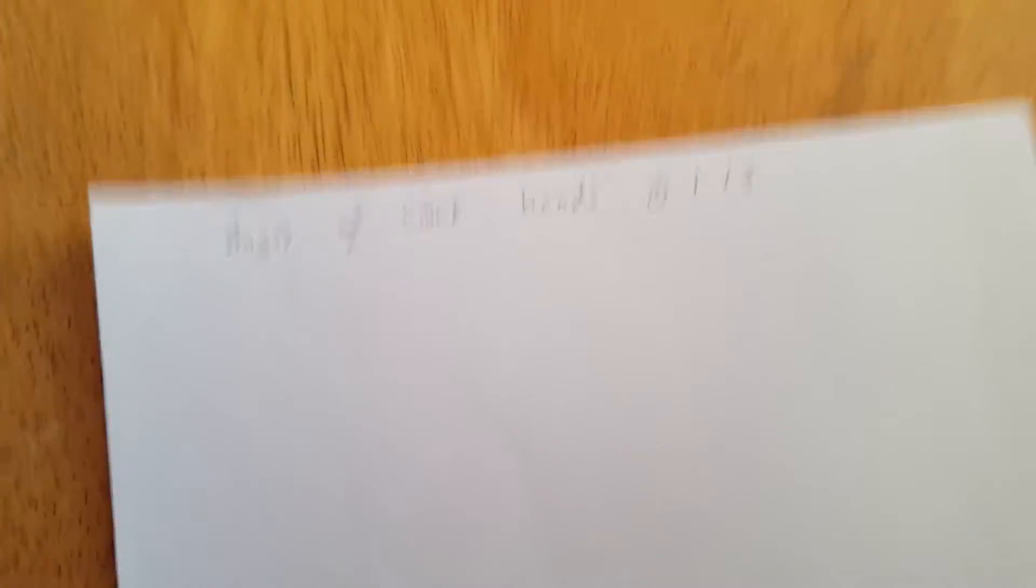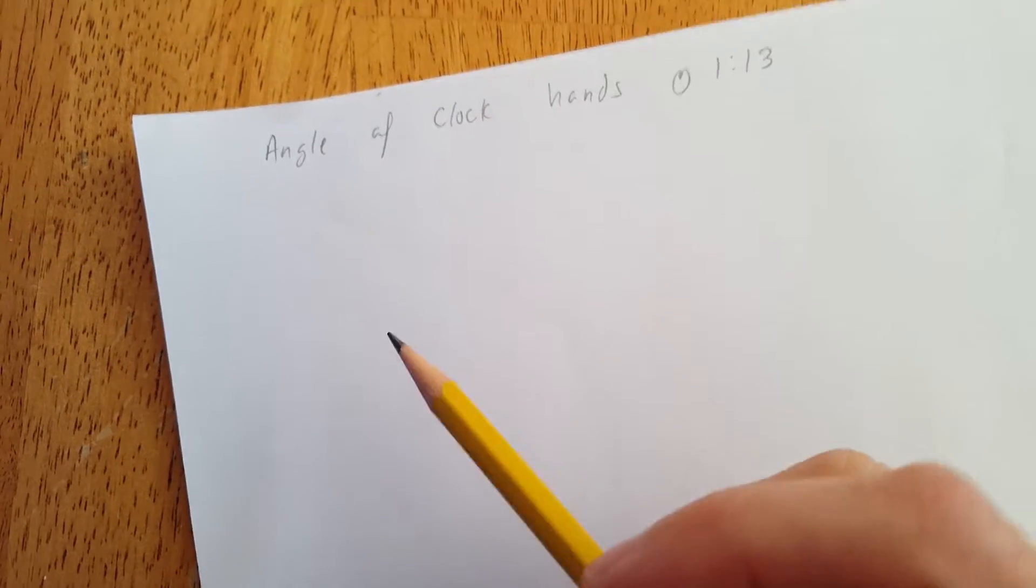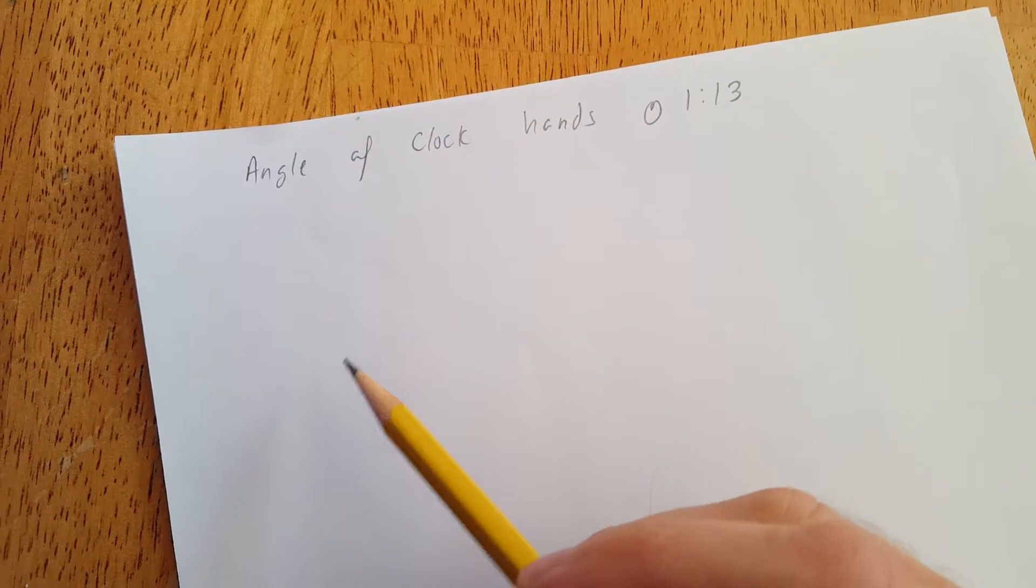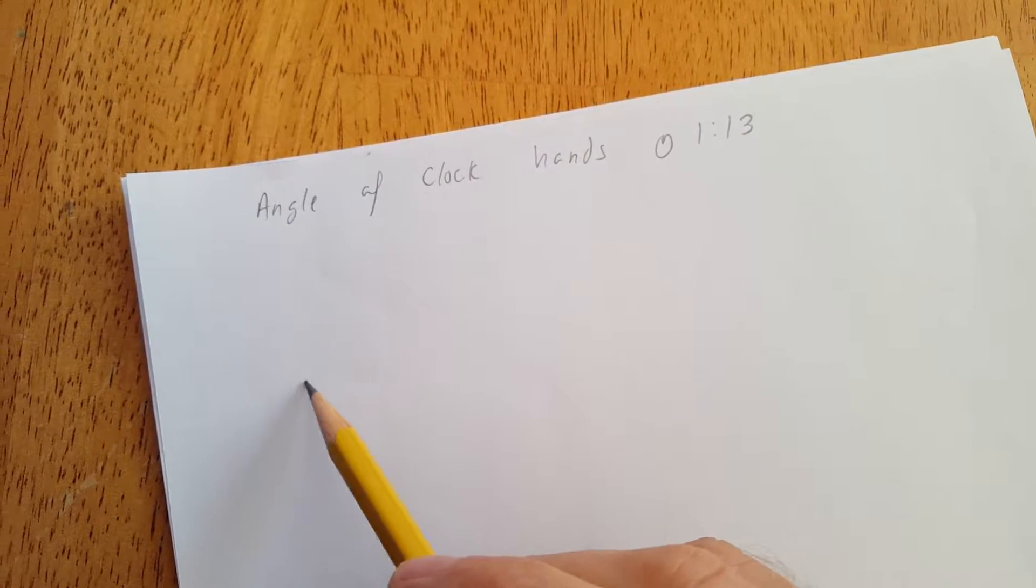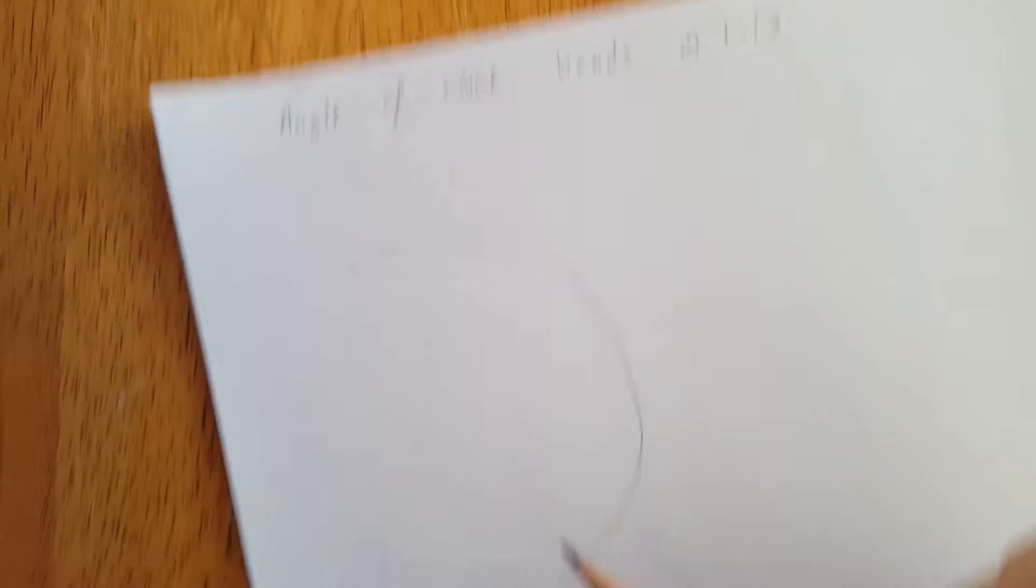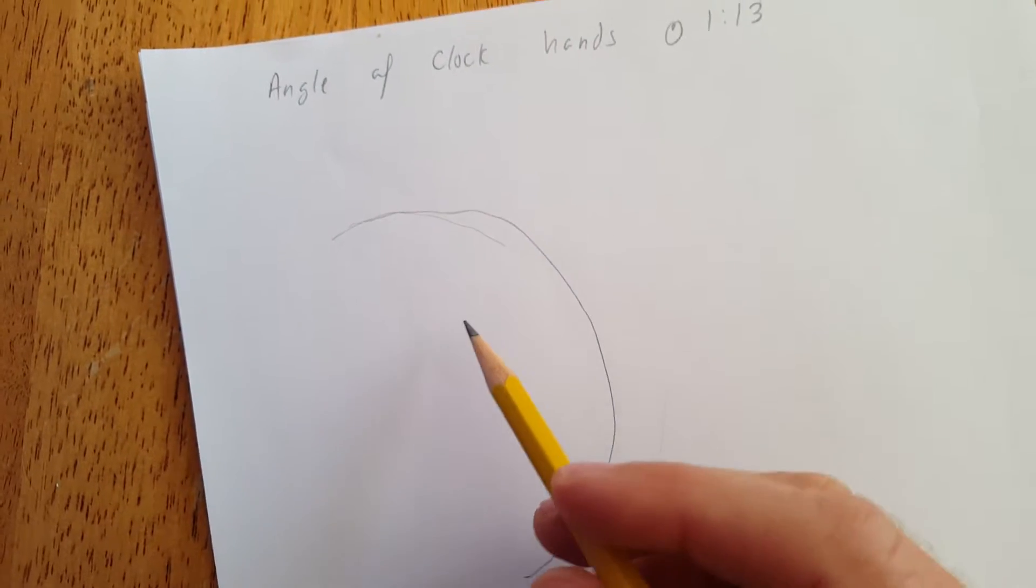Alright, so here is the problem. We want to find the angle of clock hands at 1:13. So step one with any problem that is geometric - this is a geometry problem, a circle problem - we want to draw a picture, step one. So I'm just going to draw a blown-up picture of half a circle here.